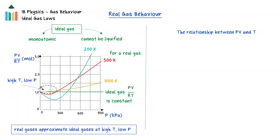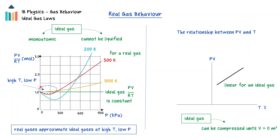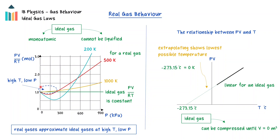A graph of the pressure times the volume as a function of temperature for an ideal gas will be linear. Because an ideal gas cannot be liquefied, it can continue to be compressed until a theoretical volume of zero meter cubed is reached. The graph can then be extrapolated to find the value of absolute zero, the lowest theoretical temperature of matter. This is the basis for the Kelvin temperature scale. Zero Kelvin is equivalent to minus 273.15 degrees Celsius.